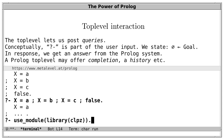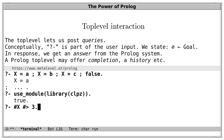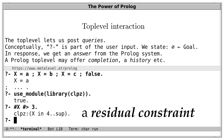If we load the CLPZ library, then we can post constraints over integers. For instance, when we ask whether there is an integer X greater than 3, then Prolog tells us yes, if there is an integer that is 4 or greater. That is not a concrete solution but rather a conditional solution — it is only a solution if this constraint can be satisfied. In this case it's easy to see the constraint can be satisfied, and what we see here reflects infinitely many concrete solutions: X=4, X=5 and so on. We call such an answer a residual constraint, and also a residual goal.